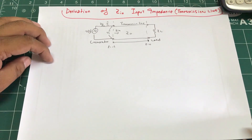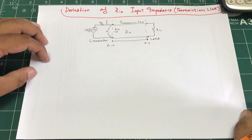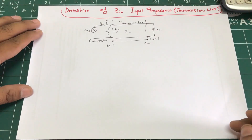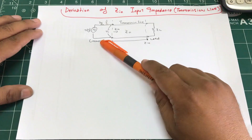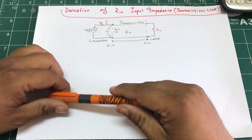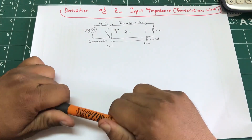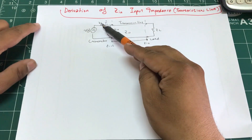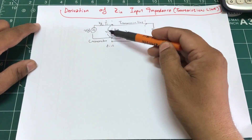In this video we're going to derive the input impedance of a transmission line. In my last video I derived the characteristic impedance of a transmission line. Here's our basic model: we have a generator connected to a load via a transmission line. The characteristic impedance of this line is Z₀, ZG is the generator impedance, and ZL is the load impedance. What we're trying to calculate is Z_in.